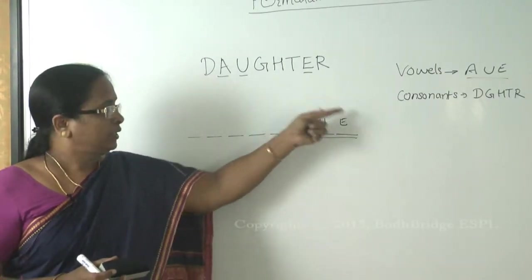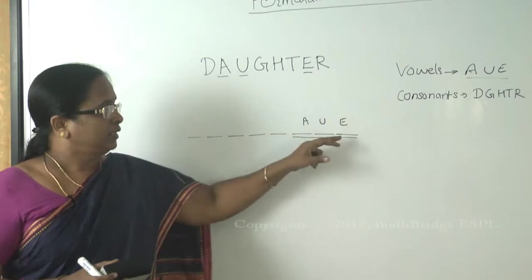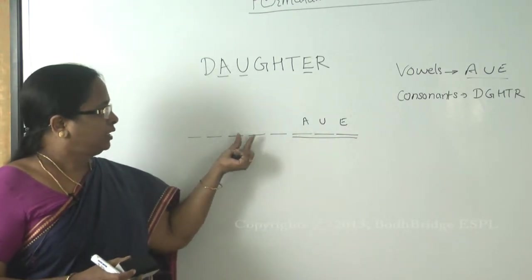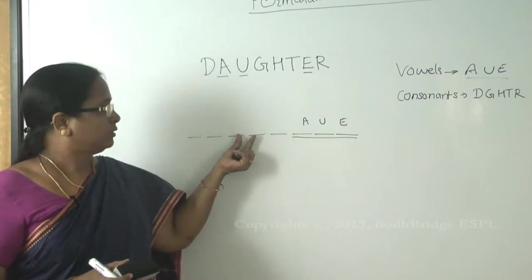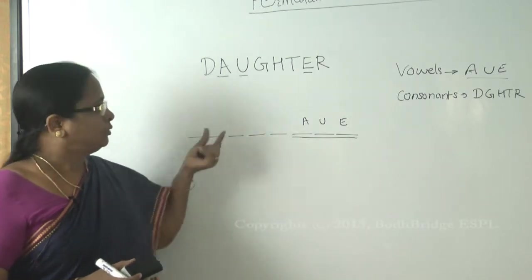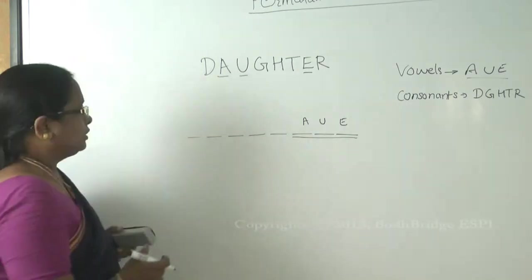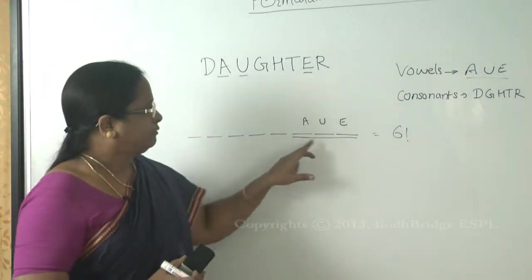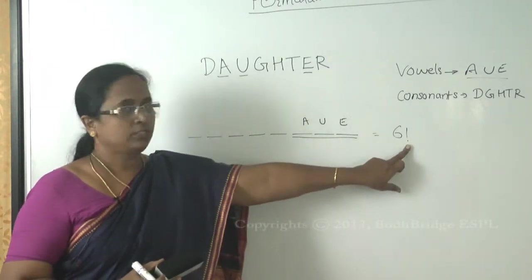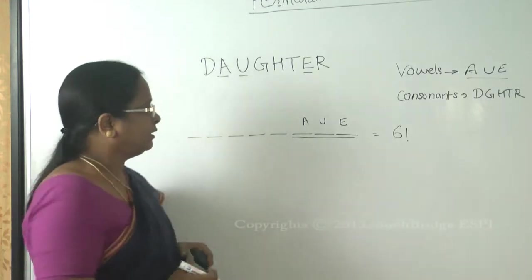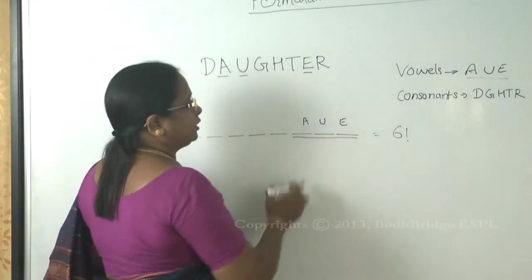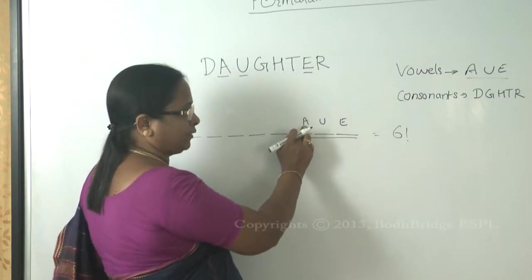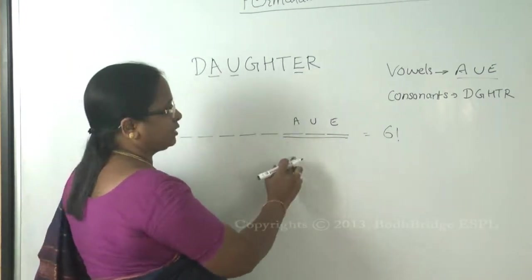Since the vowels must be together, whenever you move them they move as a single slot — anywhere you move, it goes as one unit. So how many slots are there? One, two, three, four, five, six — therefore six factorial ways are possible to arrange this. And then A, U, E, though they are together, can be arranged internally in three factorial ways.